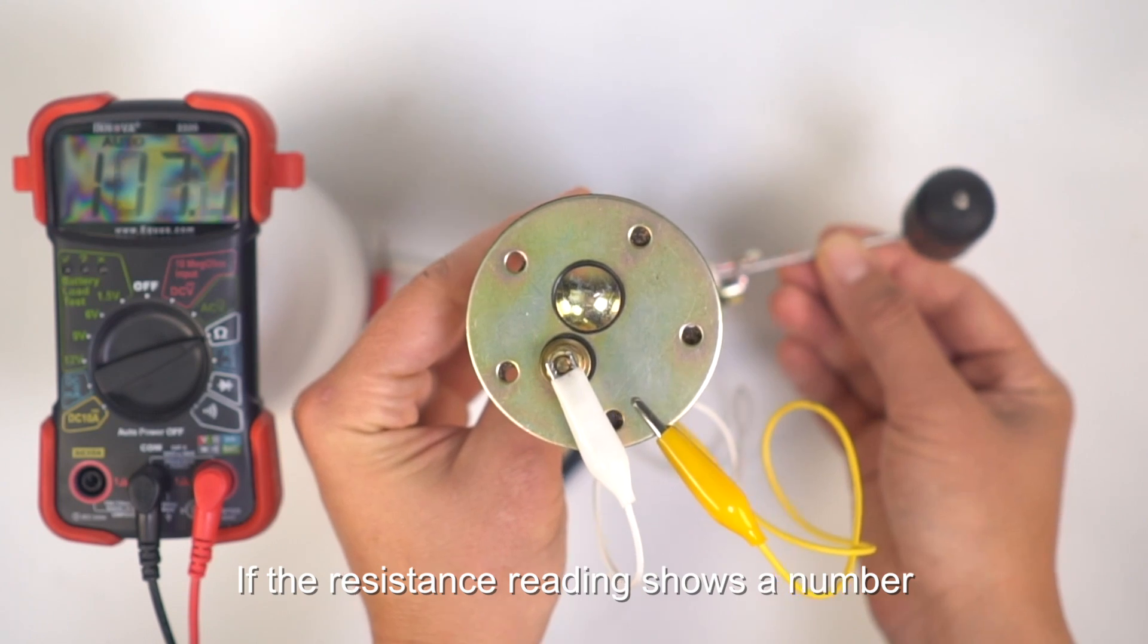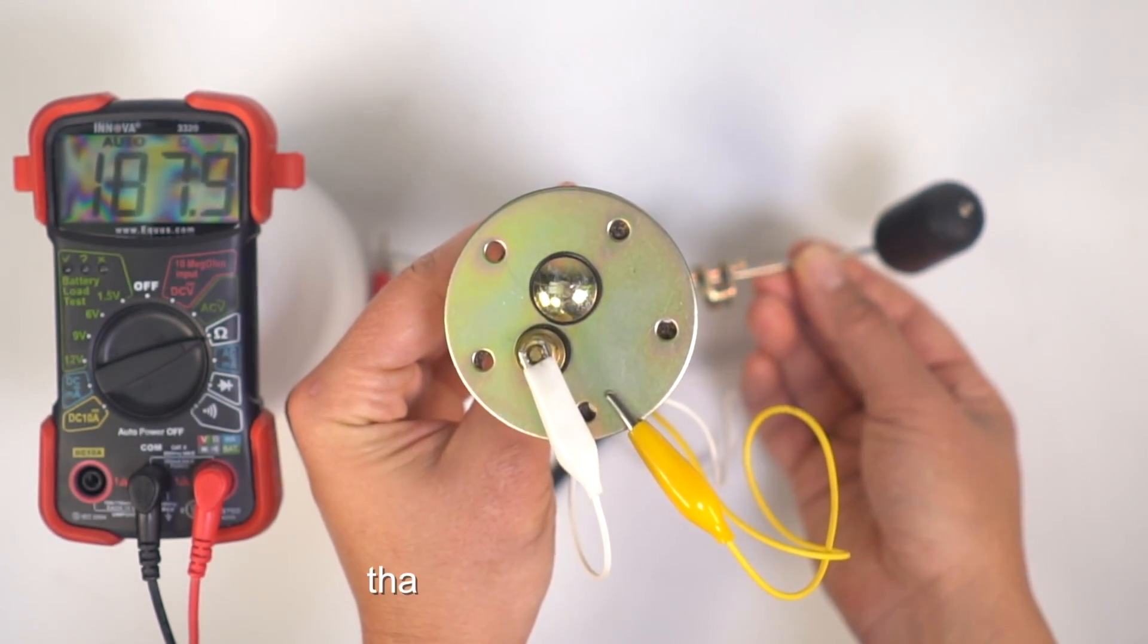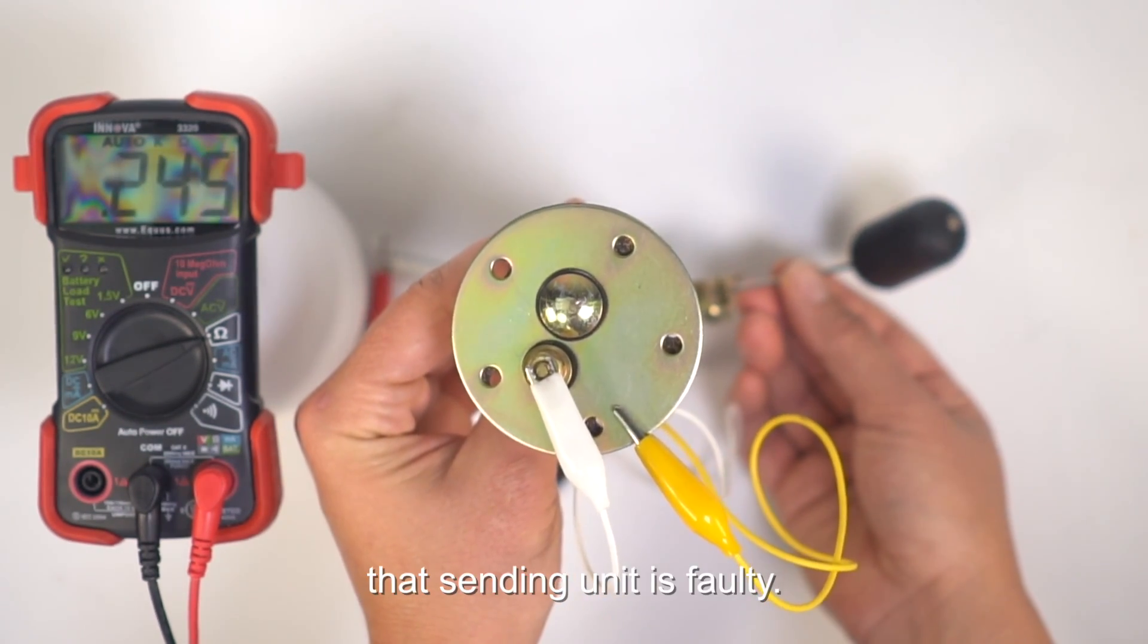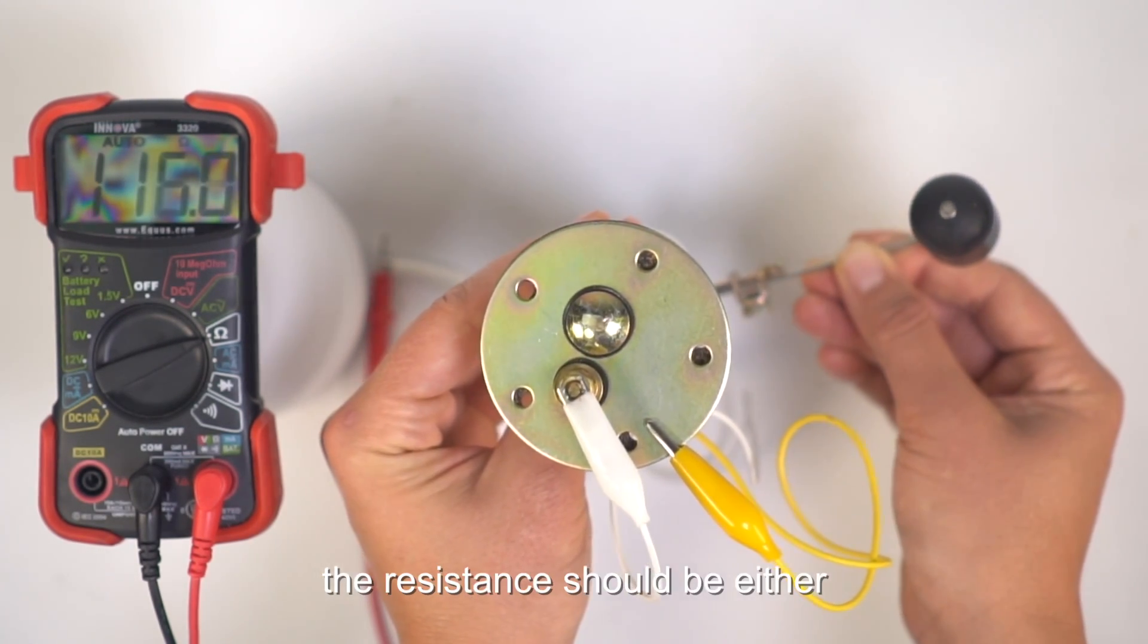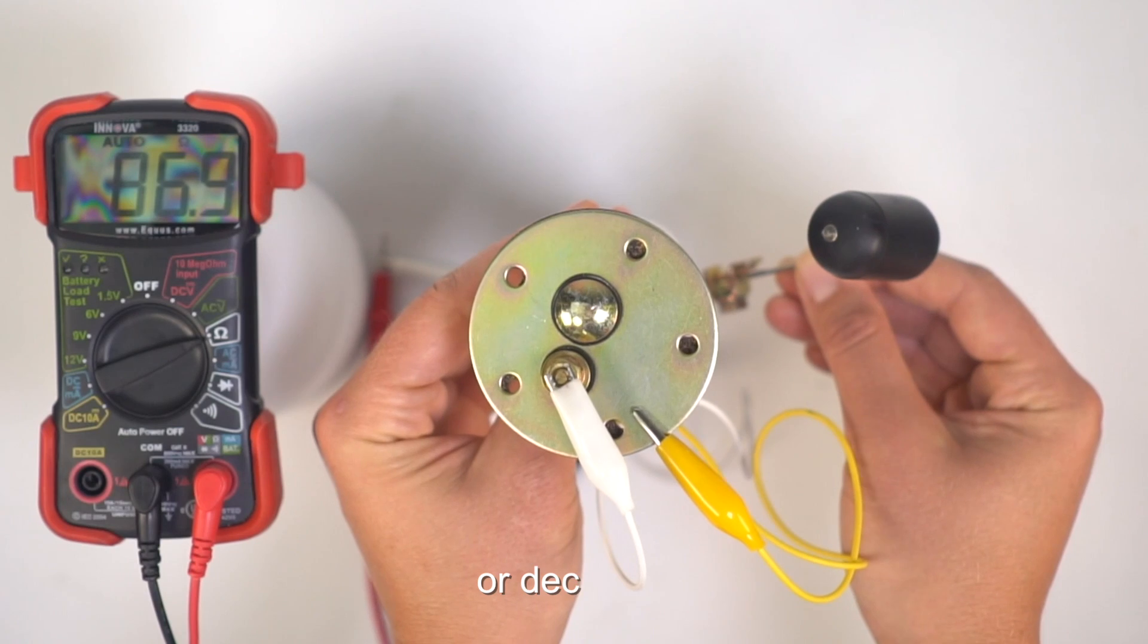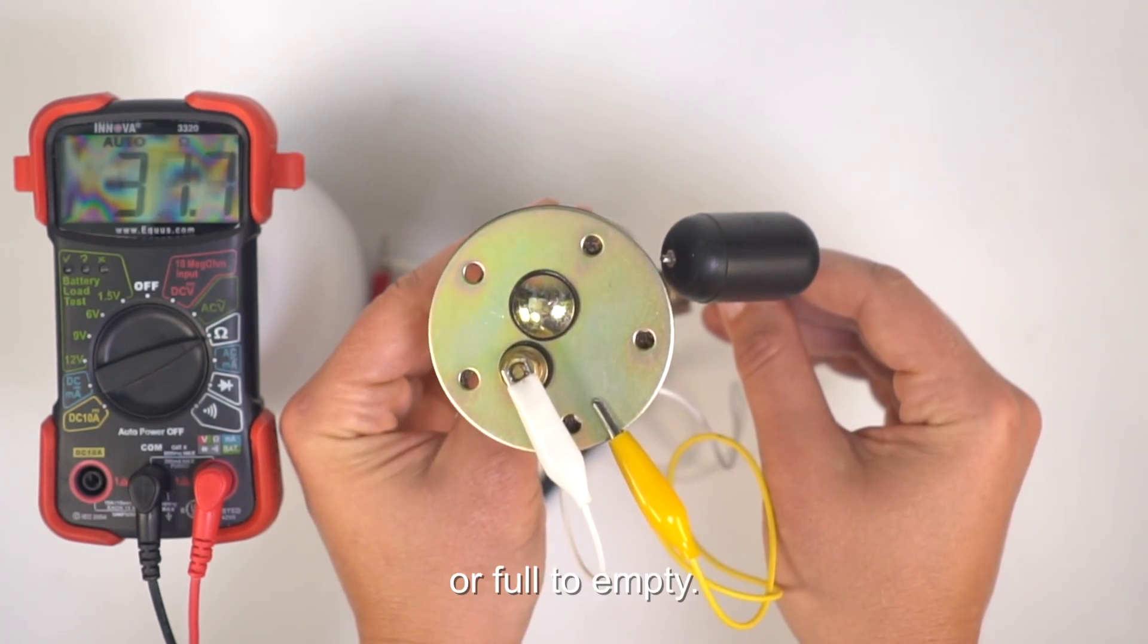If the resistance reading shows a number out of range, that sending unit is faulty. Depending on the ohm range of your sending unit, the resistance should be either a gradual increase or decrease, from empty to full, or full to empty.